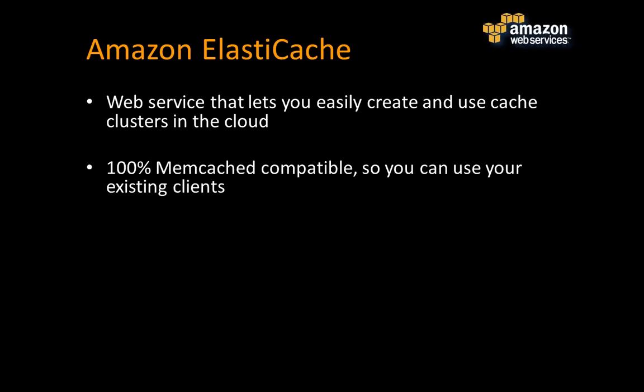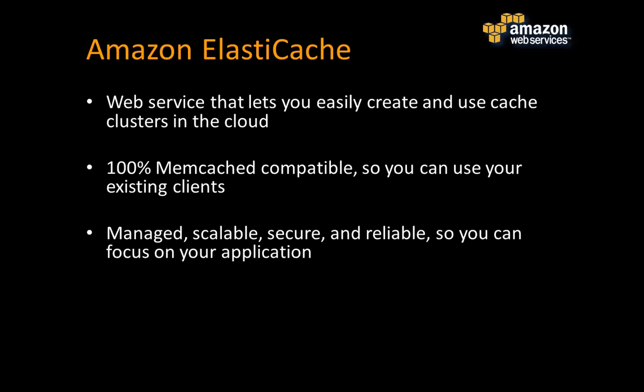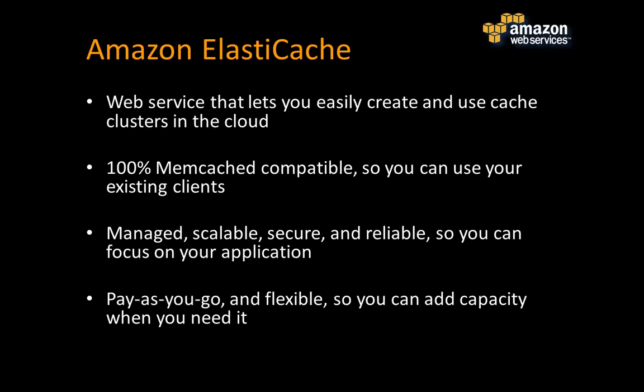Amazon ElastiCache is 100% compatible with Memcached, meaning you can use the dozens of existing client-side libraries and run them against ElastiCache unchanged. Like all Amazon Web Services, it's managed, scalable, and secure. Memcached by default includes no form of authentication, which has led to caches being left open — ElastiCache manages this so it's not a concern. Amazon monitors cache nodes and replaces them if they go down, so you can focus on keeping your application running. It's pay-as-you-go, so you can add capacity when you need it and take it down when you don't.